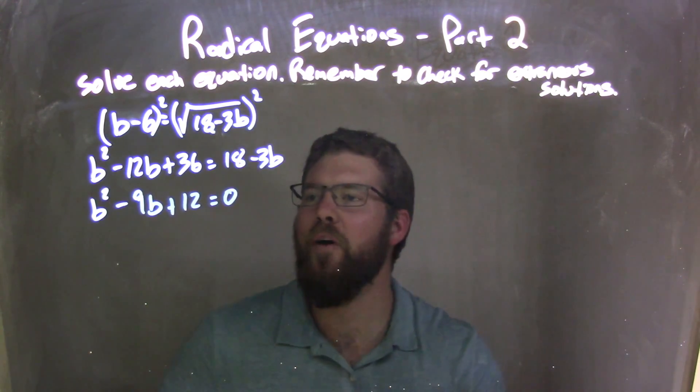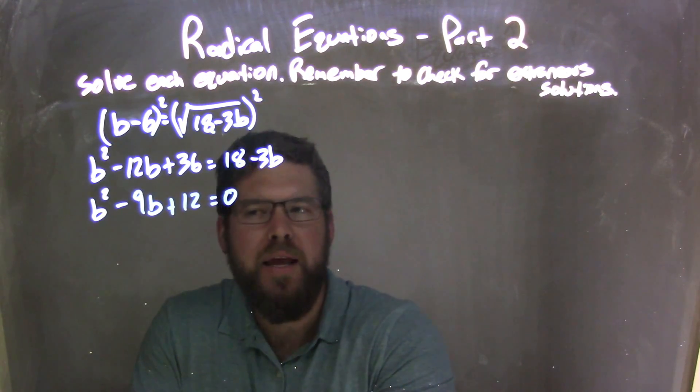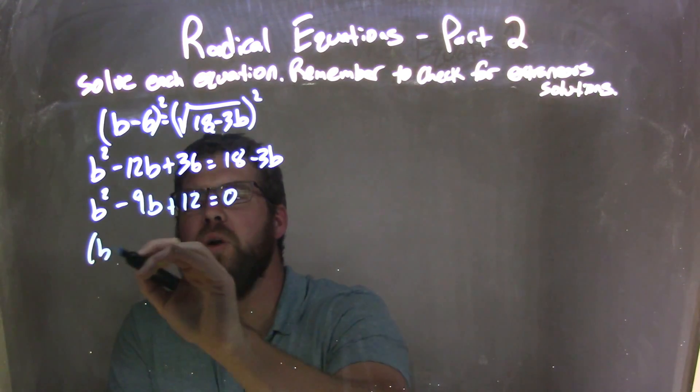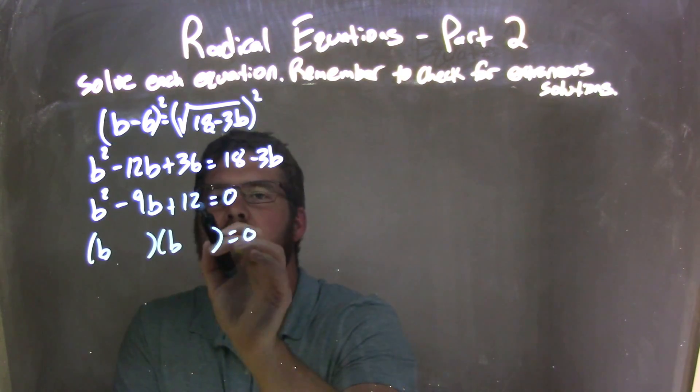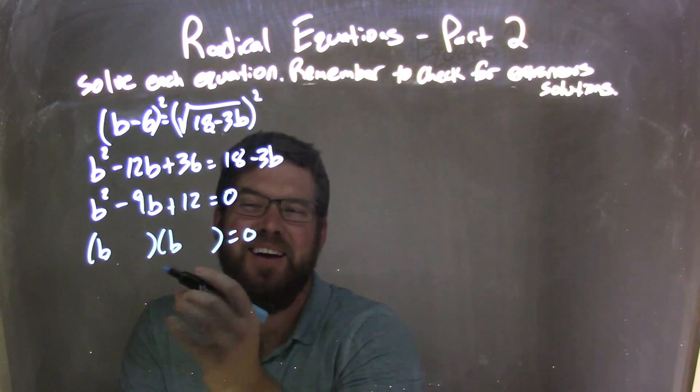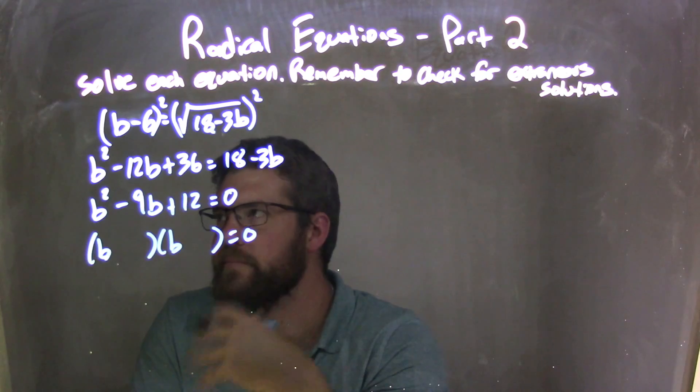Now I need to factor this. What two numbers multiply to be 12 that add to be negative 9? And I'm thinking of, well, you tell me, what are you thinking of? Let's factor this out, what are you thinking of here? Multiplies to be 12, adds to be negative 9. Pause it if you don't have it yet, think about it, don't just watch my answer, see if you can do it.